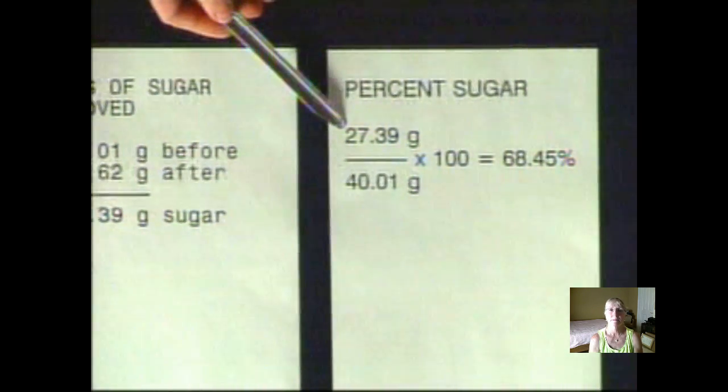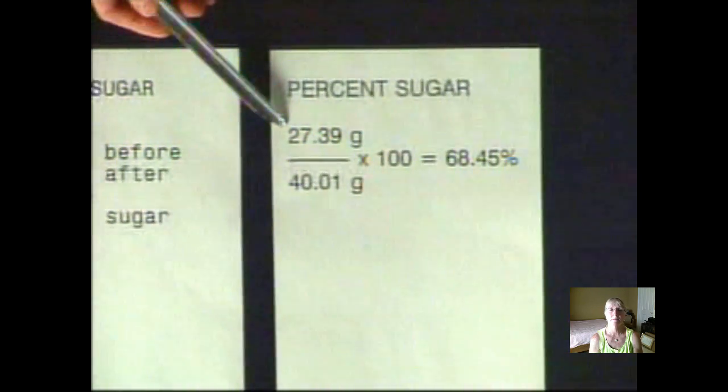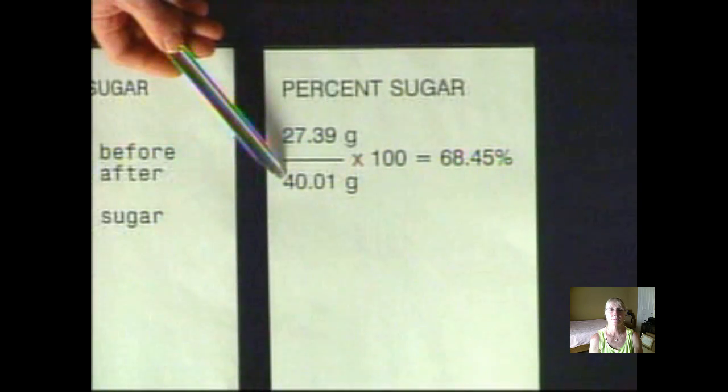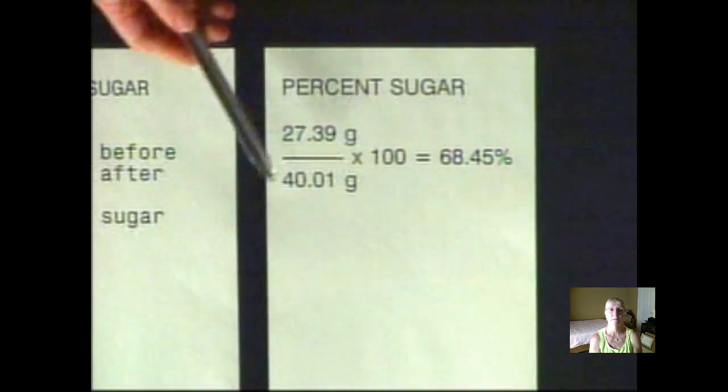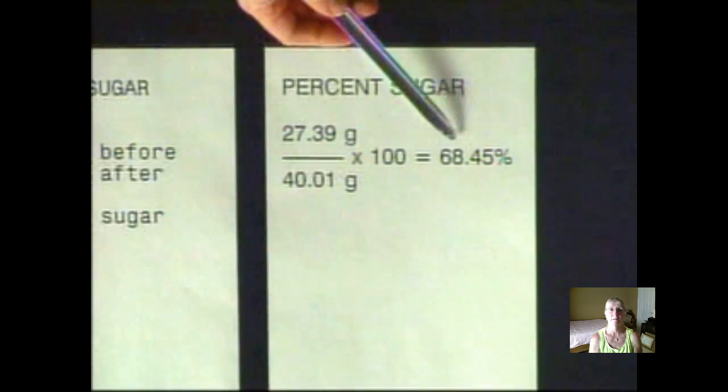Placing that mass of 27.39 grams of sugar over the mass of the gum before we started, 40.01 grams, we can calculate the percent of 68.45 percent sugar in the chewing gum.